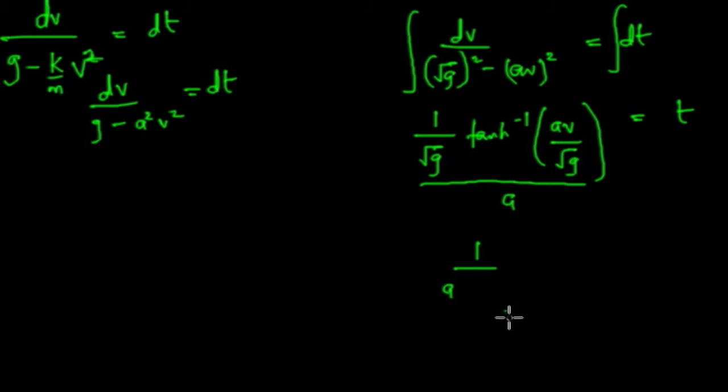what we would have is 1 over a root g, hyperbolic tangent of av all over g equals t. But then don't forget, we want to solve for v.